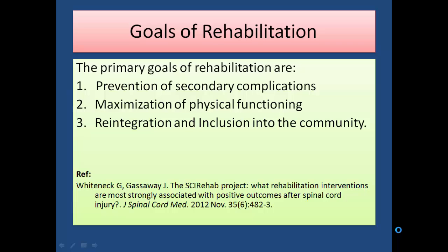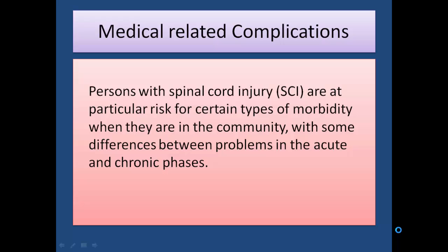The primary goals of rehabilitation include the prevention of secondary complications, minimization of physical functioning limitations, and reintegration and inclusion in the community. Today our main focus is on the complications of spinal cord injury. Persons with spinal cord injury are at particular risk for certain types of problems when they are in the community.